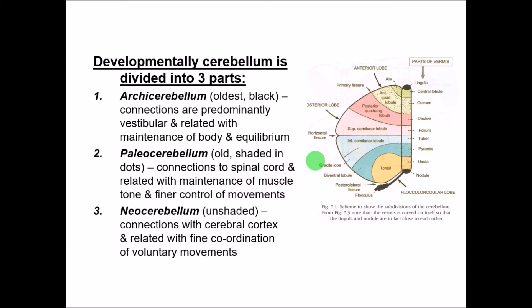The cerebellum is also divided developmentally into three parts. The archicerebellum is the oldest part, comprising the lingula and the flocculonodular lobe, present even in primitive animals. It is mainly important for maintenance of body equilibrium, with connections mainly from the vestibular system. The paleocerebellum includes mainly the anterior lobe and parts of the vermis — the central lobule, culmen, pyramid, and uvula. Its connections are mainly to and from the spinal cord, and it is important for maintaining muscle tone and finer control of movements like walking.